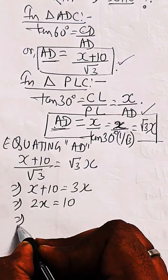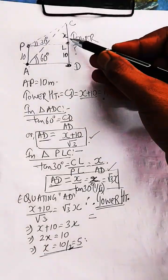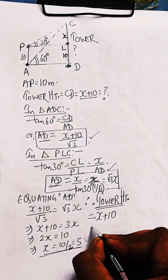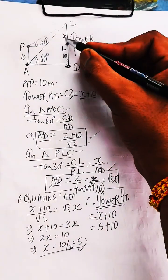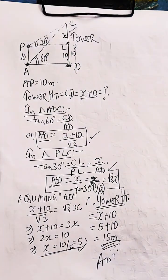The tower height is basically 5 plus 10, that is X plus 10, which is 15 meters. This is 5, this is 10, so total 15 meters is the tower height.